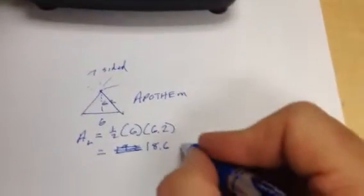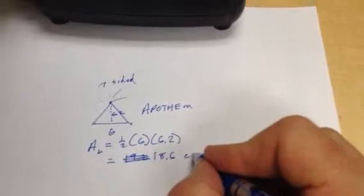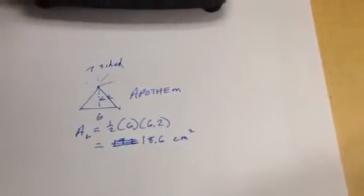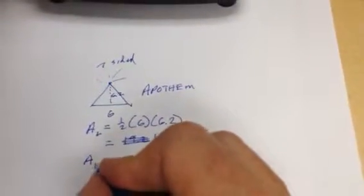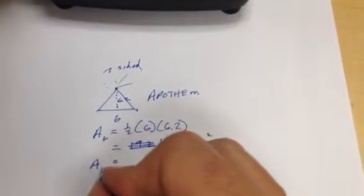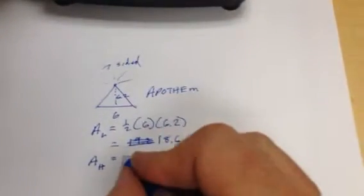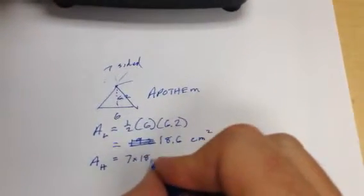18.6. All right, that's 18.6, whatever I'm measuring in. In this case, I think it was centimeters squared. It's one of them. And the question is, that is not the area of the whole thing. That is not the area of the, what we said was a heptagon. The heptagon. There are seven of those little triangles in there.